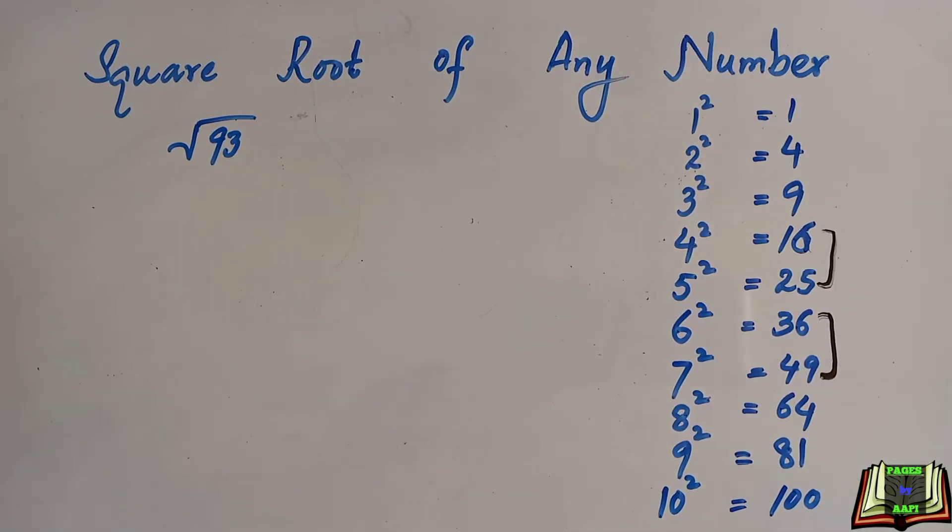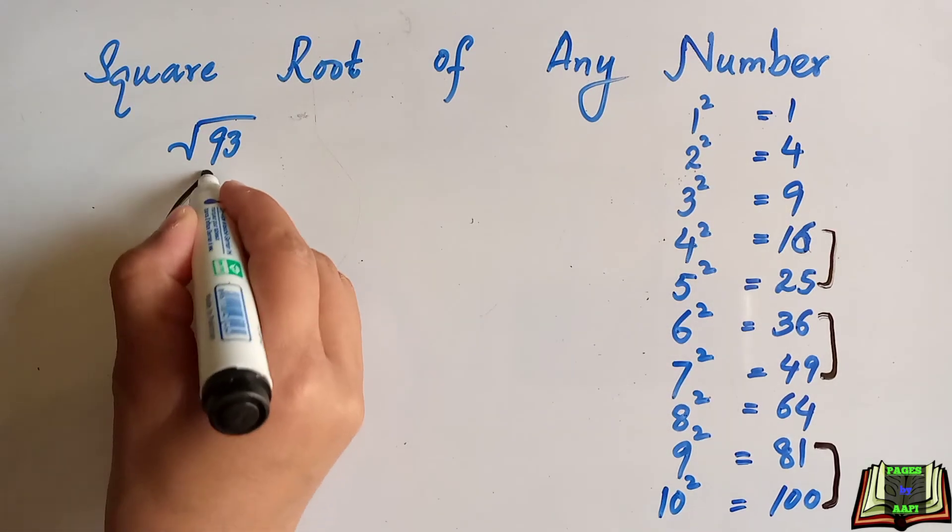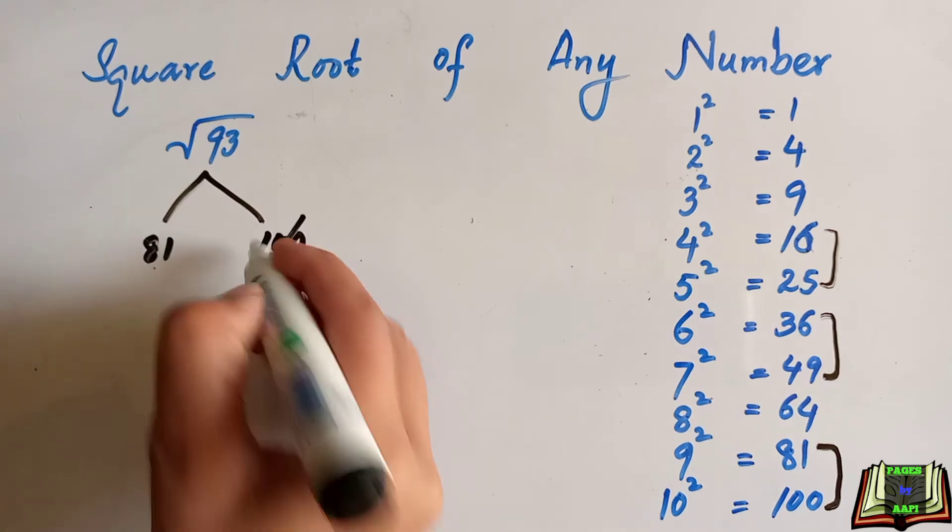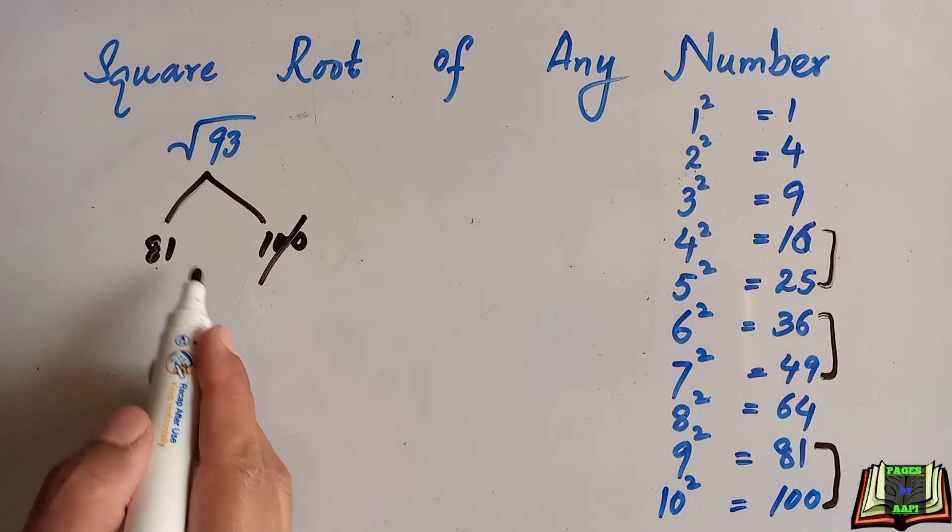Now let's find the square root of a bigger number, 93. 93 is near to 81 and 100. We will use 81 and ignore 100. 81 is the perfect square of 9.